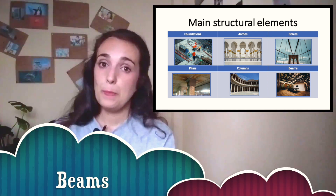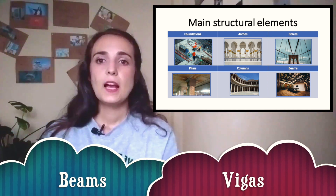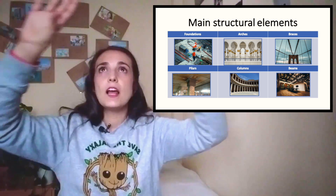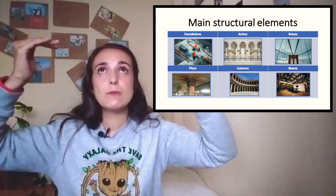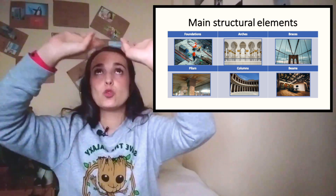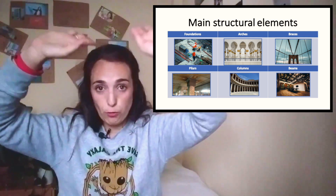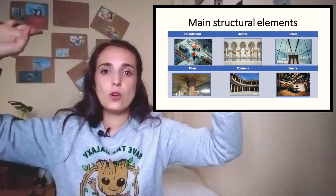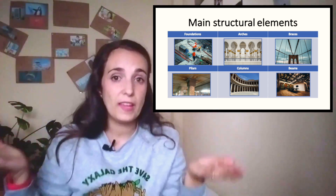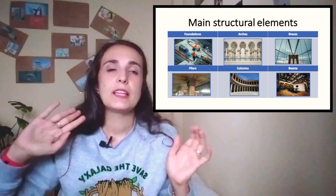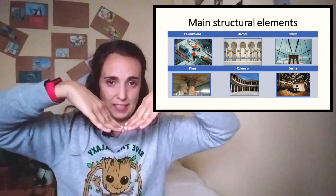And finally, we have beams. Beams are those horizontal bars. They could be visible or invisible — they could be inside the roof. Their function is also to support weight, but in this case it's to avoid bending.